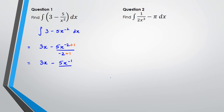So this can be written as 3x minus 5x to the power of negative 1, divided by negative 1. If you want to simplify further, you can write this as 3x plus 5 over x. Don't forget the plus c at the end — you should really have had plus c from the beginning. That's question one done.